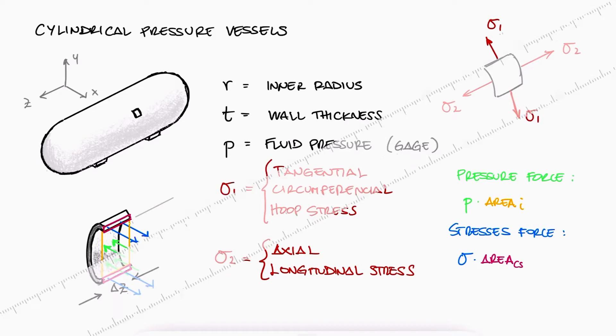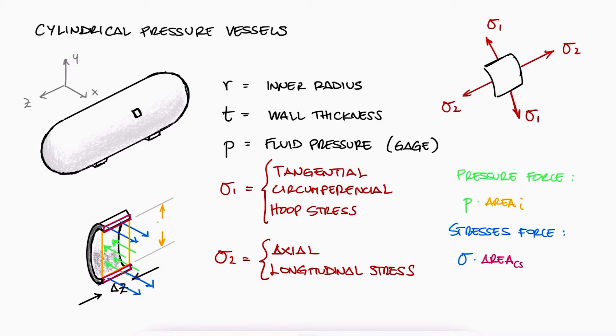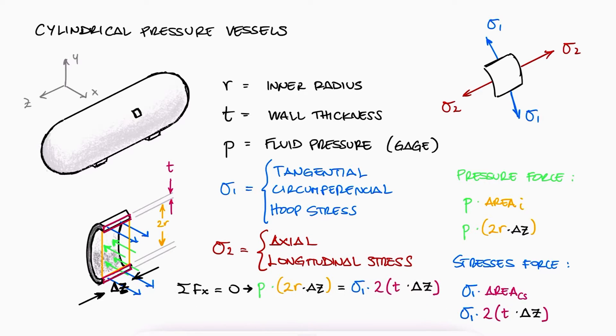In terms of the dimensions we defined, the internal area is 2 times the radius times the length of the cut delta z, and the cross section area of the material is the thickness t times delta z times 2, one at the top and one at the bottom. Since the sum of forces in that direction has to be equal to zero, we can solve for sigma1, the hoop stress, as pr over t.